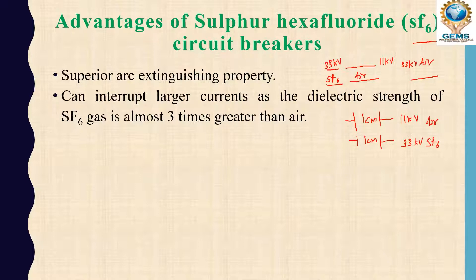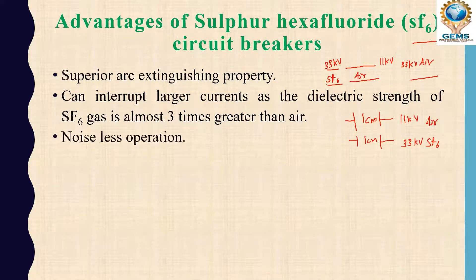In the same small distance, if we use SF6 gas, we can withstand 33 kV. For air, we would need much greater distance. This property is called dielectric strength. The next advantage is noiseless operation - when a fault occurs in the system, there will be no noise and it will operate smoothly.